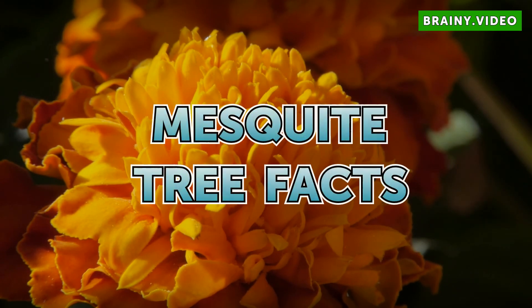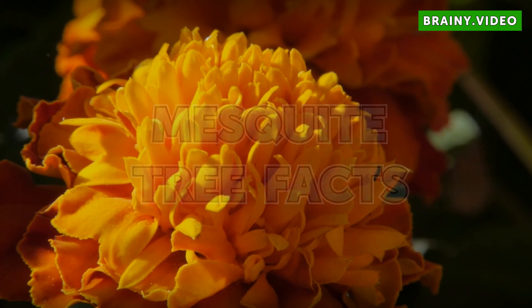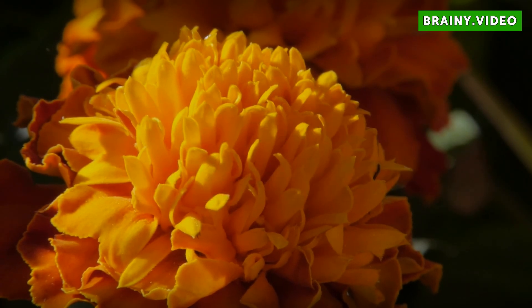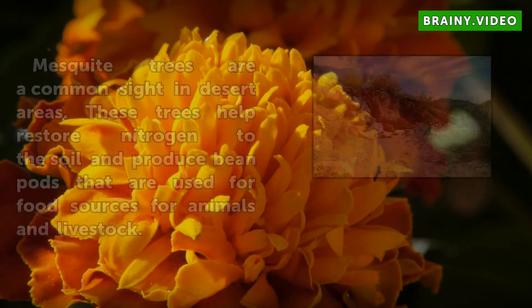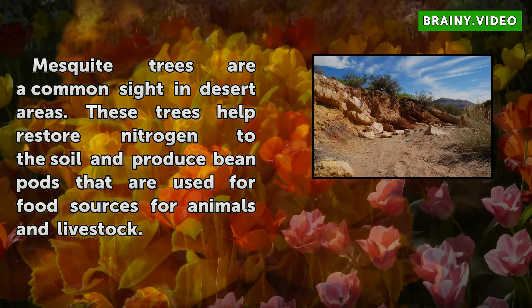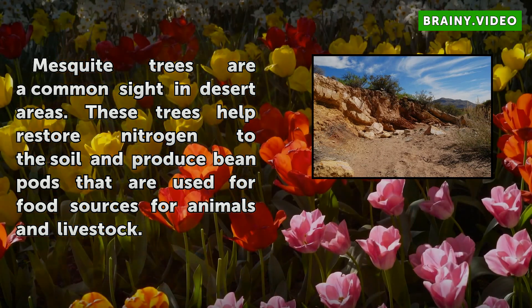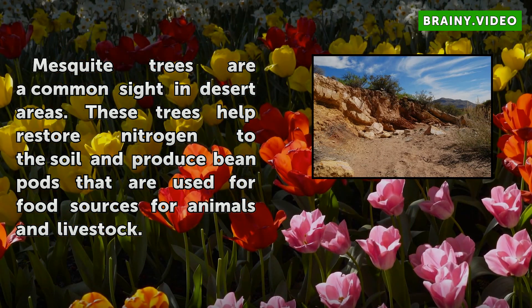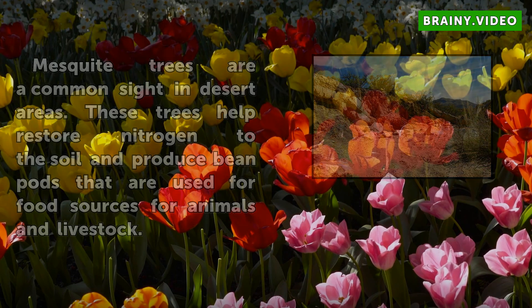Mesquite Tree Facts. Mesquite trees are a common sight in desert areas. These trees help restore nitrogen to the soil and produce bean pods that are used for food sources for animals and livestock.